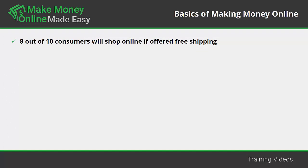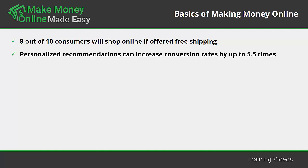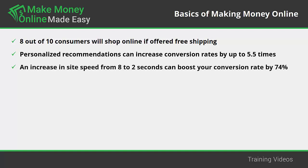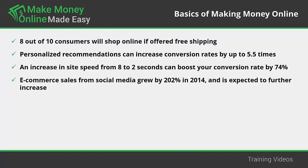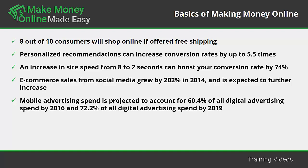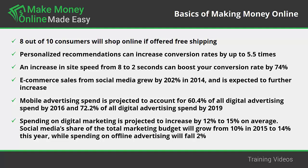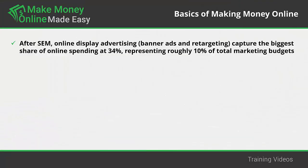8 out of 10 consumers will shop online if offered free shipping. Personalized recommendations can increase conversion rates by up to 5.5 times. An increase in site speed from 8 to 2 seconds can boost your conversion rate by 74%. E-commerce sales from social media grew by 202% in 2014. Mobile advertising spend is projected to account for 60.4% of all digital advertising spend by 2016, and 72.2% by 2019. Digital marketing spending is projected to increase 12–15% on average, and after SEM, online display advertising, banner ads, and retargeting capture the biggest share at 34%, representing roughly 10% of total marketing budgets.